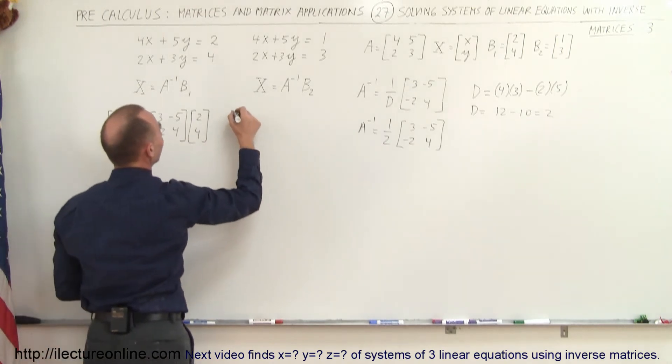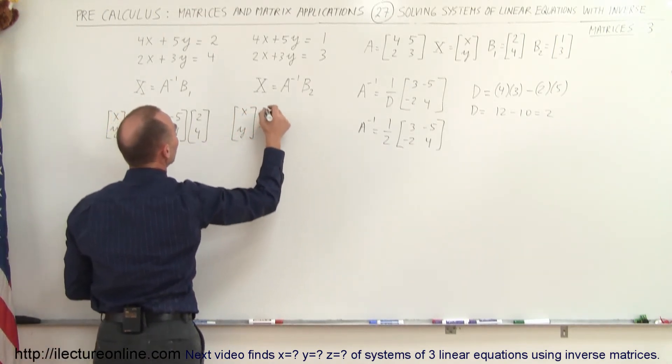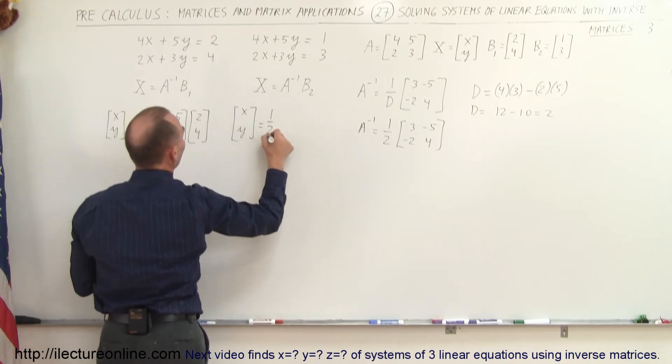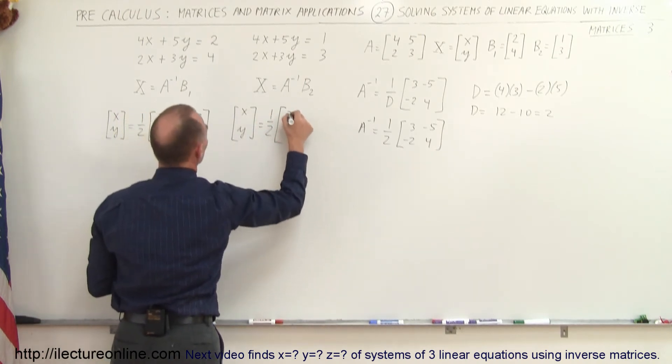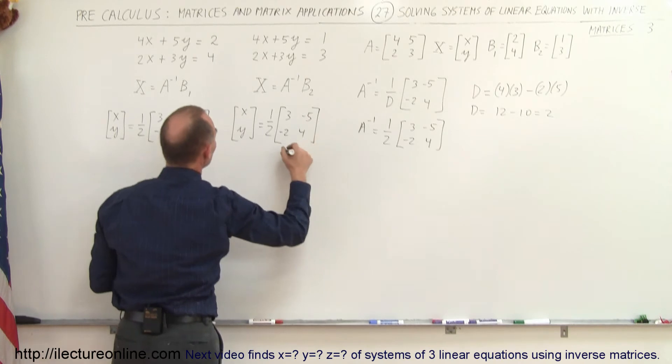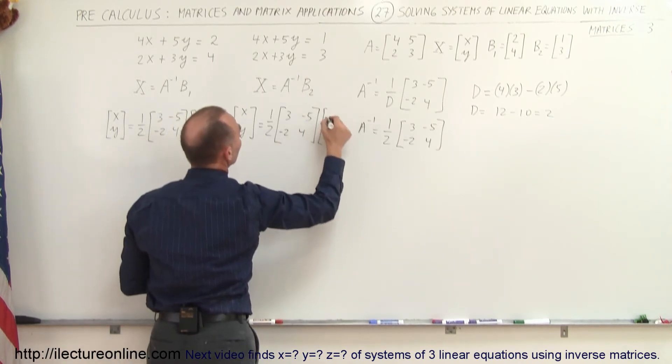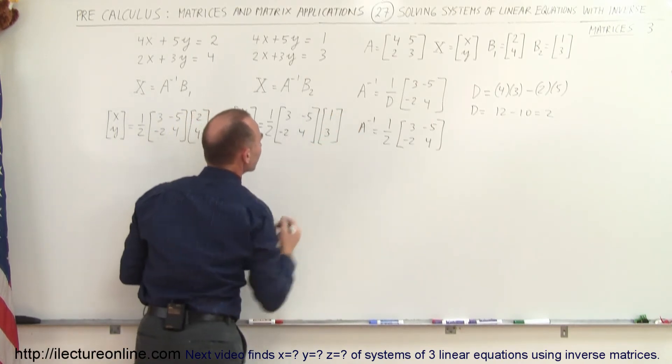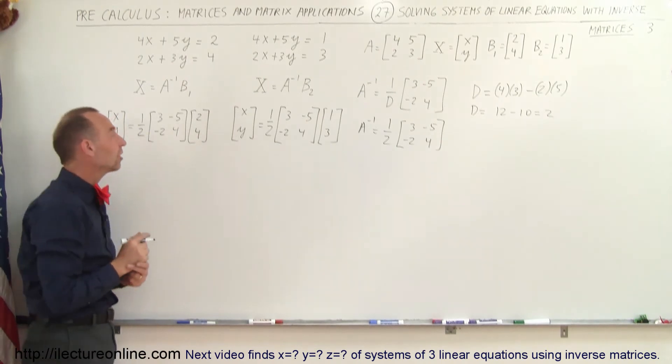In this case to find the values for x and y to solve that system of linear equations is going to be equal to the inverse of A which is 1 half times 3, minus 5, minus 2, and 4. Now be careful, this is 3 and the element minus 5, multiplied times B2 which would be 1 and 3.